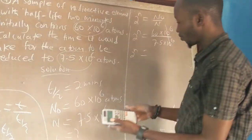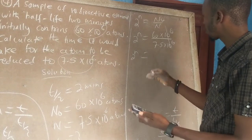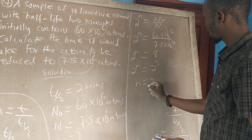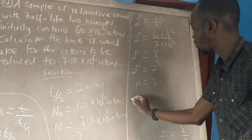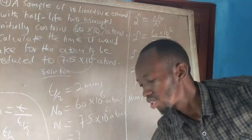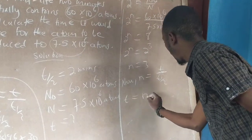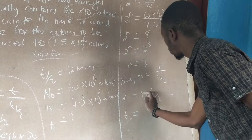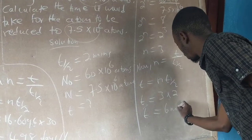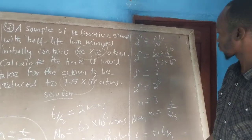Using the disintegration ratio: 2 to the power n equals N₀ over N equals 60 times 10 to the power 6 divided by 7.5 times 10 to the power 6. Cancelling gives 60 divided by 7.5 equals 8, which equals 2 to the power 3, so n equals 3. Using n equals t over T½, we get t equals n times T½ equals 3 times 2 minutes. Therefore t equals 6 minutes.